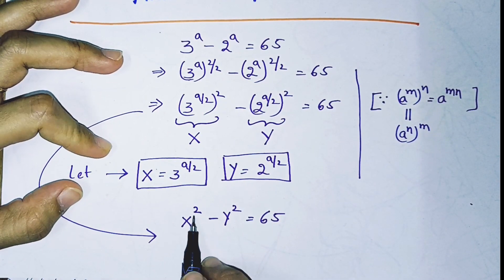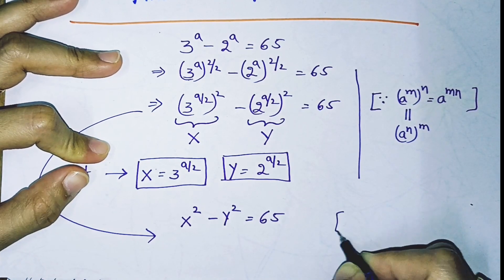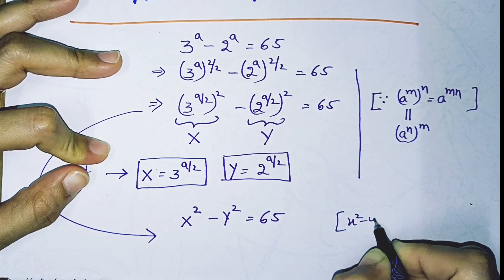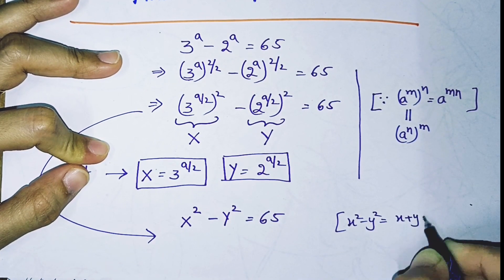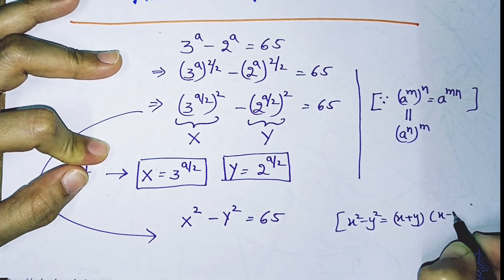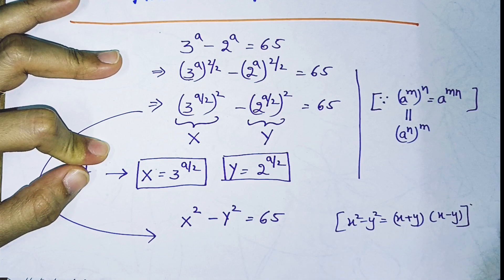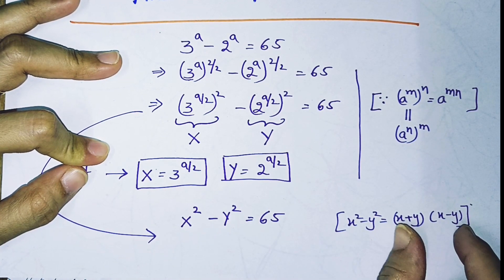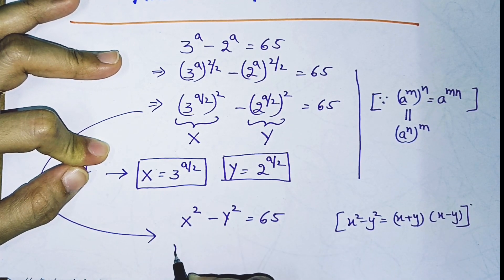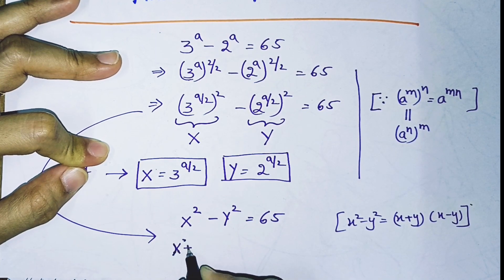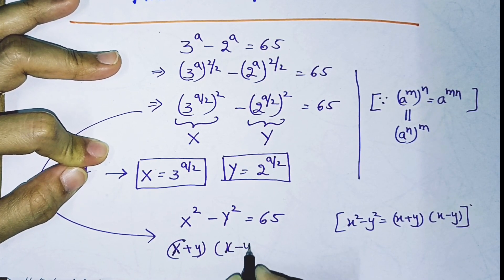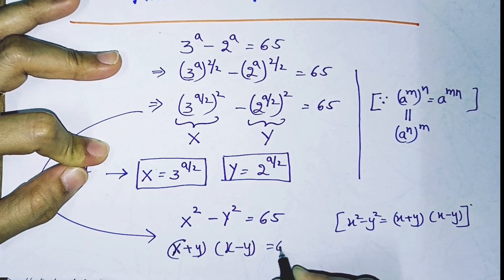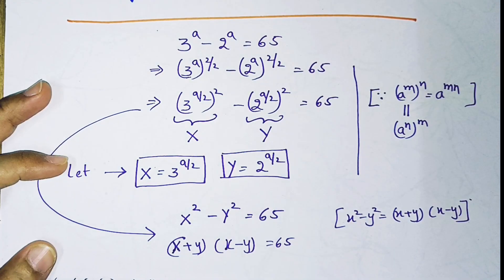We know the difference of squares formula: x² minus y² equals (x + y)(x − y). So I split x² − y² = 65 into (x + y)(x − y) = 65.